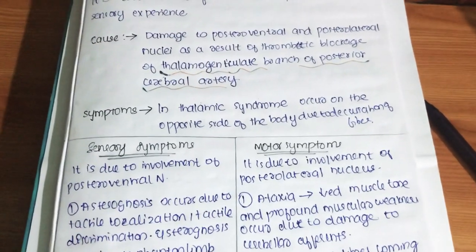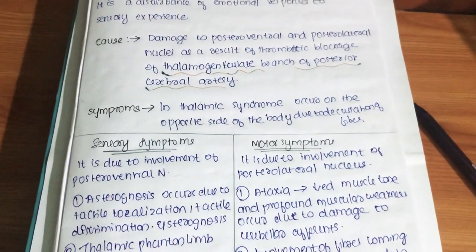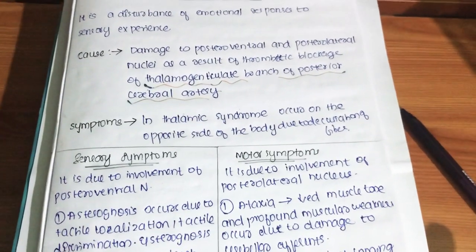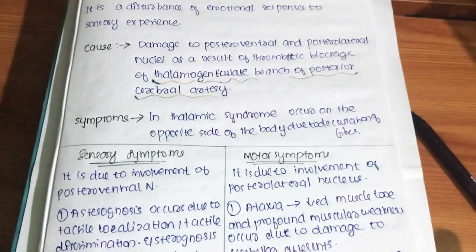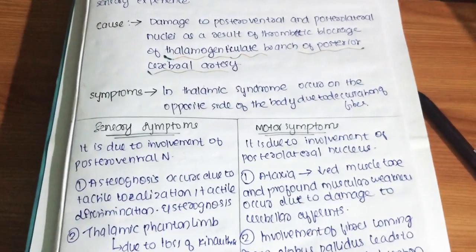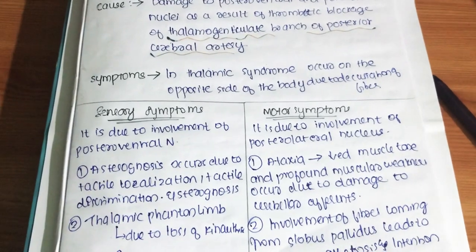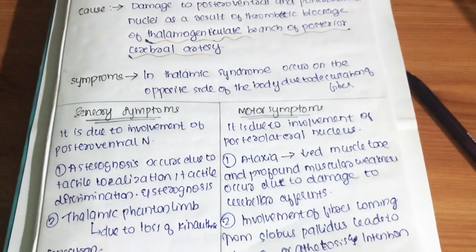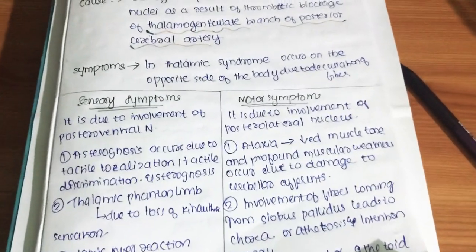To recap: thalamic syndrome is caused by blockage of the thalamogeniculate branch of the posterior cerebral artery, leading to damage of the posteroventral and posterolateral nuclei. Sensory symptoms arise from involvement of the posteroventral nucleus, and motor symptoms arise from involvement of the posterolateral nucleus.